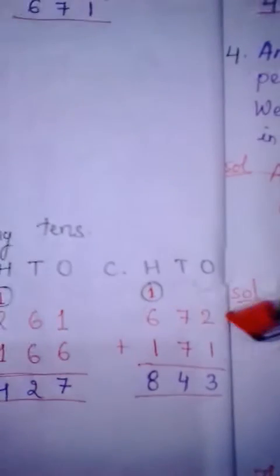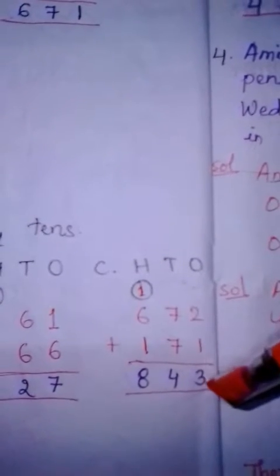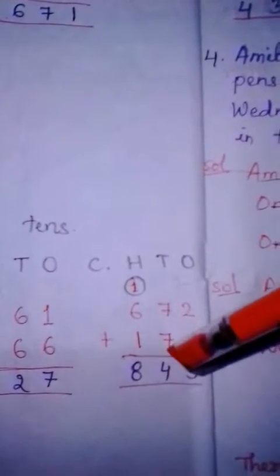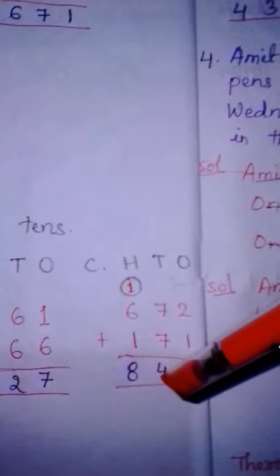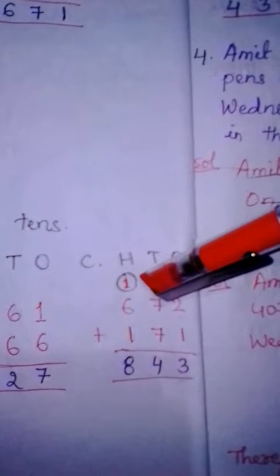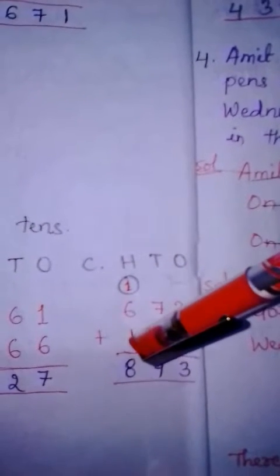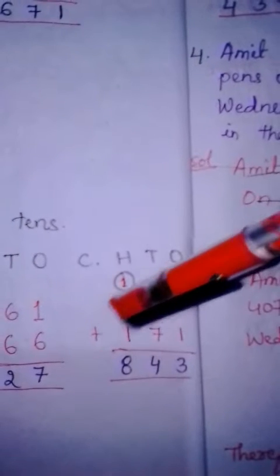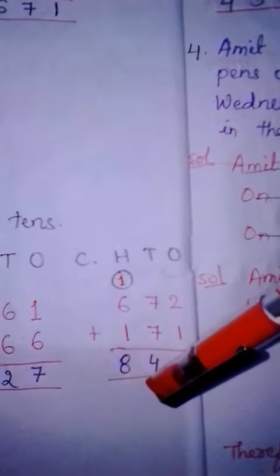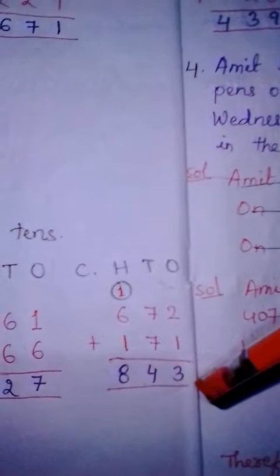Now part C: 2 plus 1 is 3. Then 7 plus 7 is 14, so we write 4 and carry 1 to the hundreds place. In the hundreds place, 6 plus 1 is 7, and carry 1 makes 8. So our answer is 843.